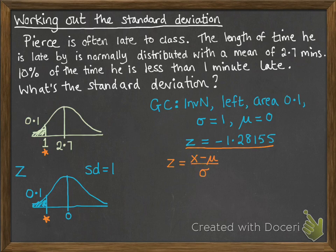So we put those values into our equation. The z is -1.28155, the x is 1, the mean is 2.7, and sigma is what we're working out.